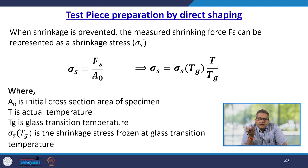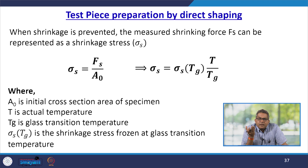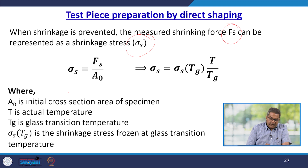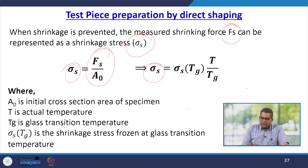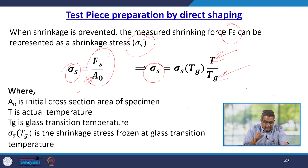When shrinkage is prevented, the measured shrinkage force F_s can be represented as the shrinkage stress σ_s = F_s / A₀, and is also expressed as σ_s(T) = σ_s(T_g) × (T/T_g), where A₀ is the initial cross-sectional area of the specimen, T is the actual temperature, T_g is the glass transition temperature, and σ_s(T_g) is the shrinkage stress frozen at the glass transition temperature.